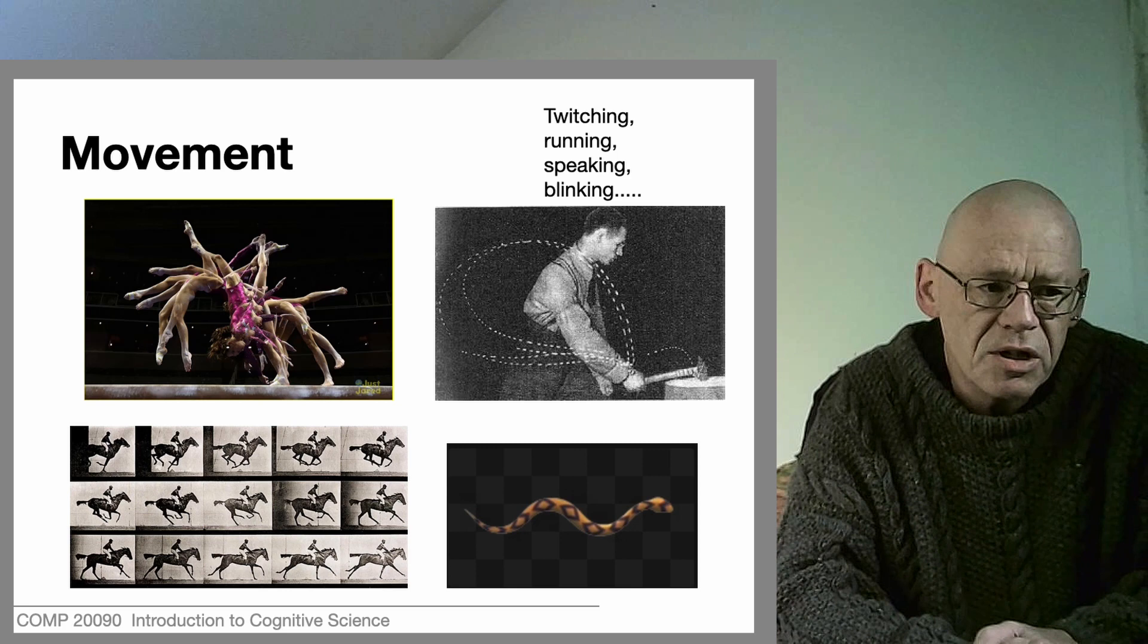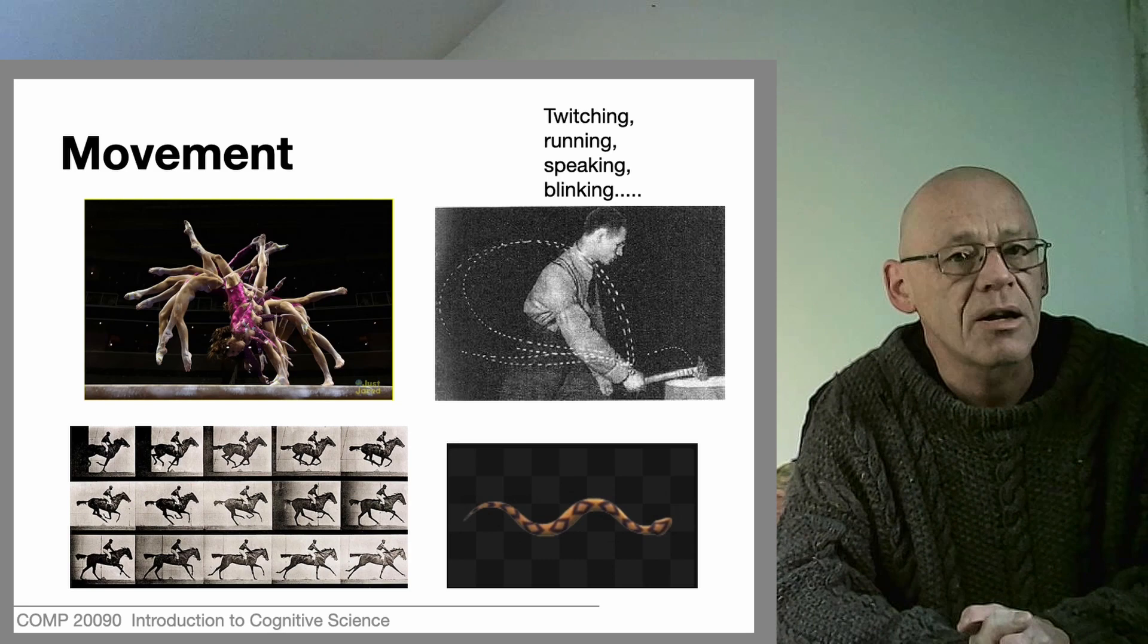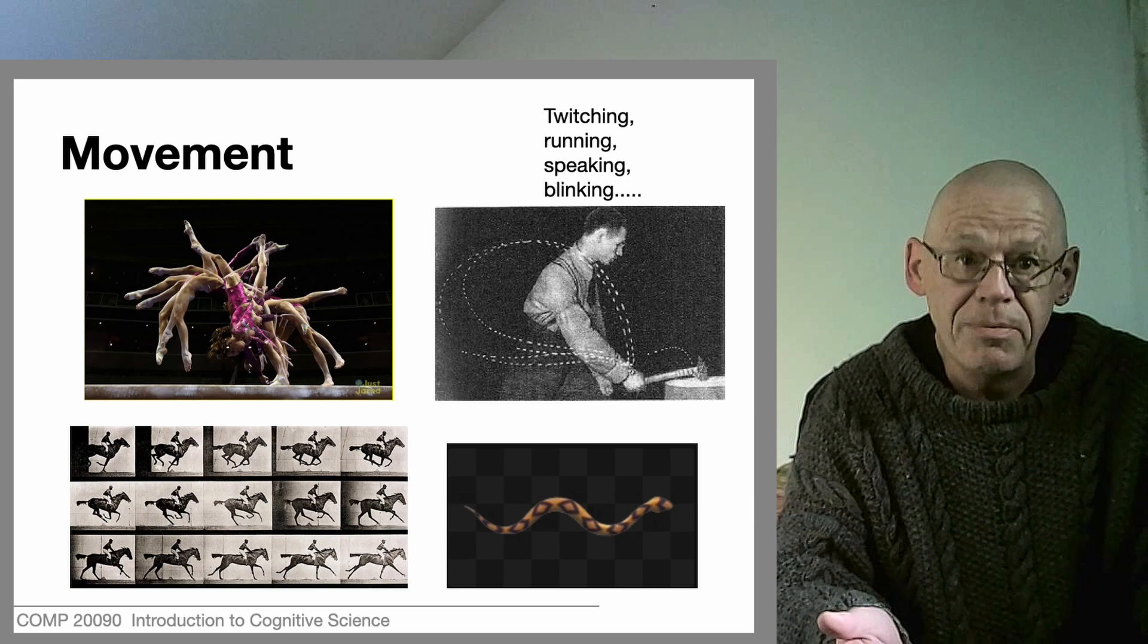This week we're going to turn to a topic which is not commonly discussed in most areas of cognitive science and it's a topic that is by and large ignored by the various forms of scientific psychology that you might encounter. We're talking about movement, the stuff that bodies do.